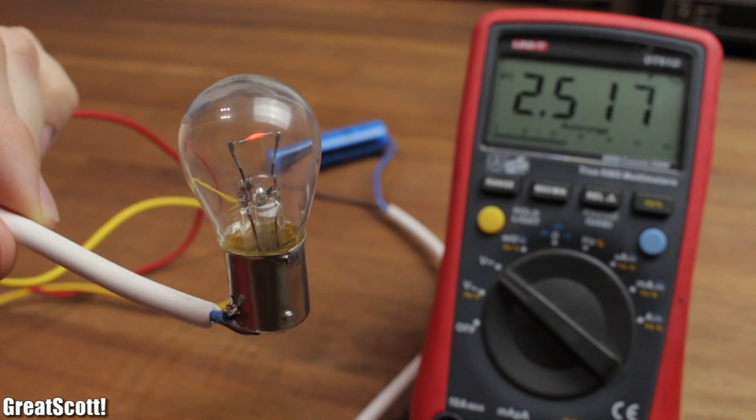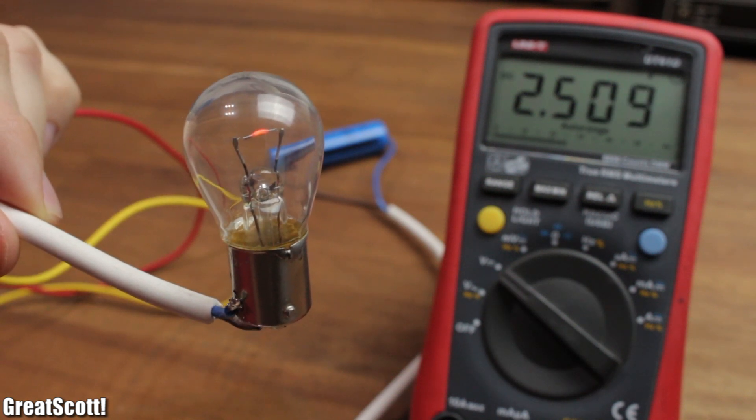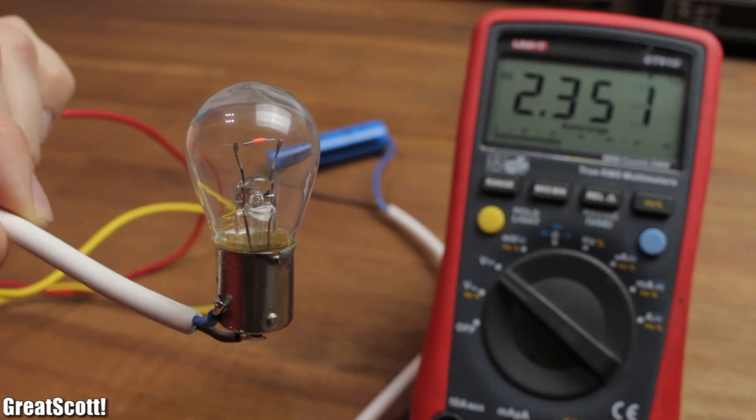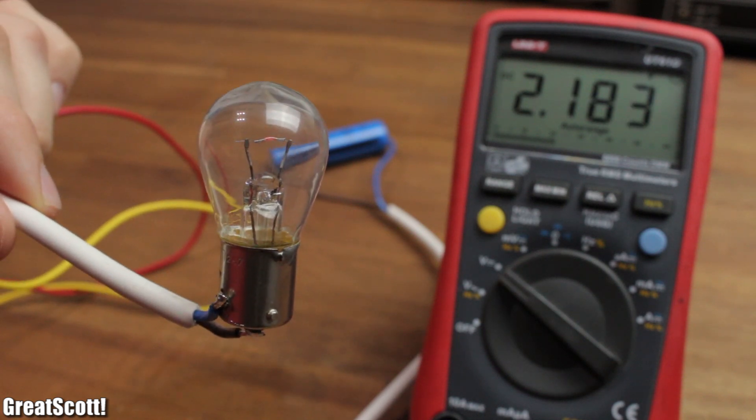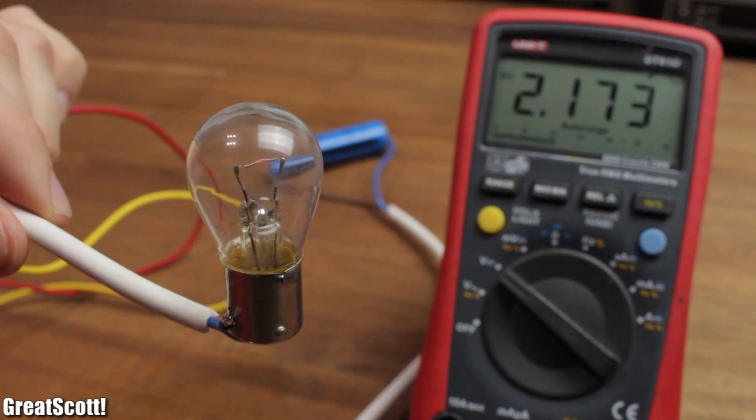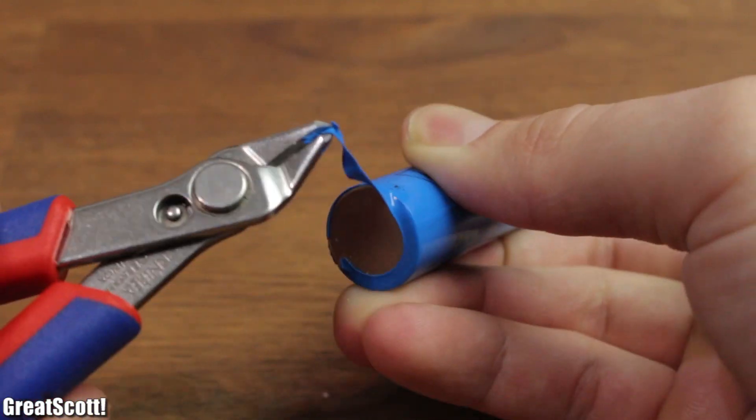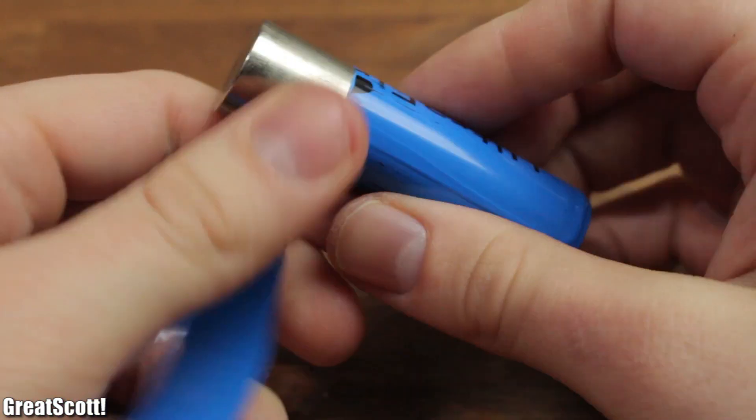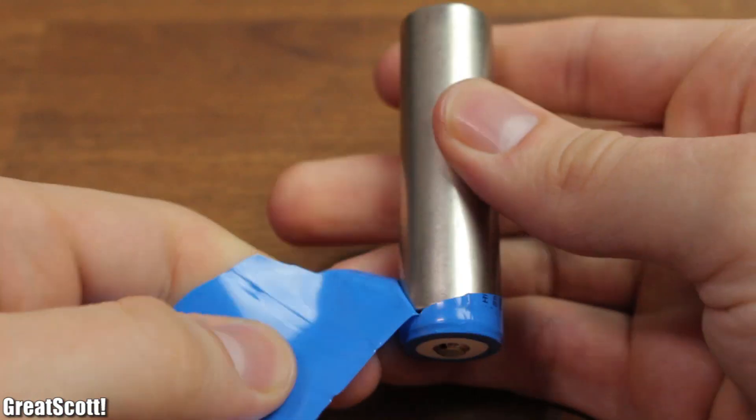Okay, now we are at 2.5 volts and it should turn off now. Or now. Or now? Well, I call bullshit, this thing has no protective circuit. And where should it hide? I stripped off the plastic around the cell and there is nothing.